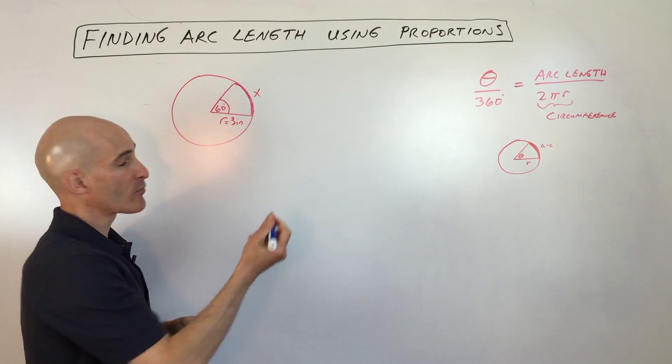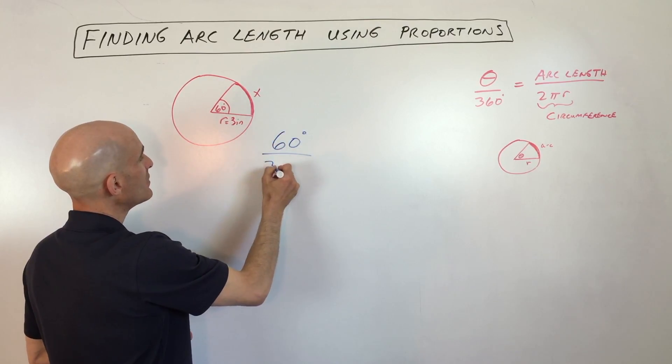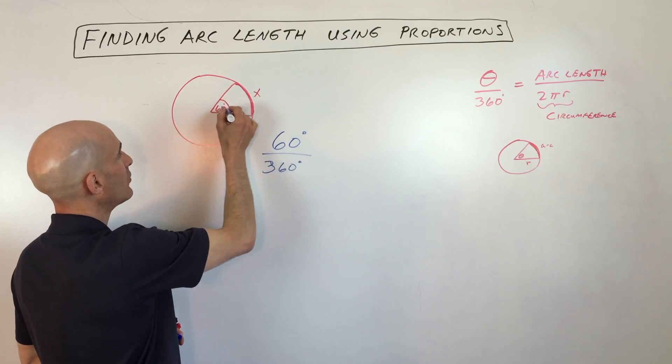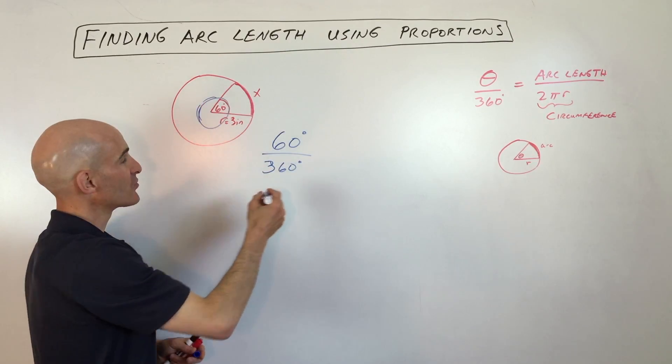So what we're going to do is set up a proportion. We're going to say 60 degrees is to 360 degrees, so this angle is to the entire circle, 360 degrees.